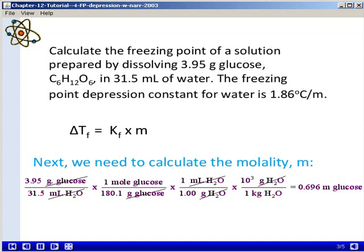We will now use the density of water to convert 31.5 milliliters of water into grams of water. Since molality is moles of solute per kilogram of solvent, we need to convert grams of water into kilograms of water. Notice that all of our units cancel out, except for moles of glucose in the numerator and kilograms of water in the denominator.